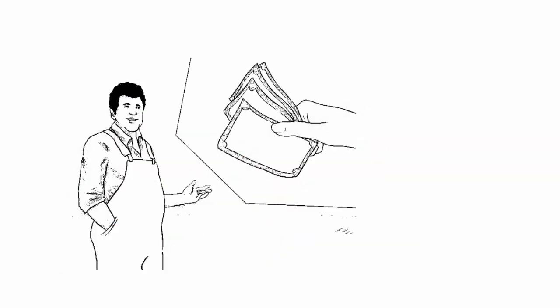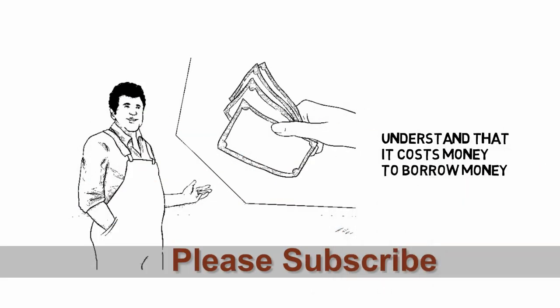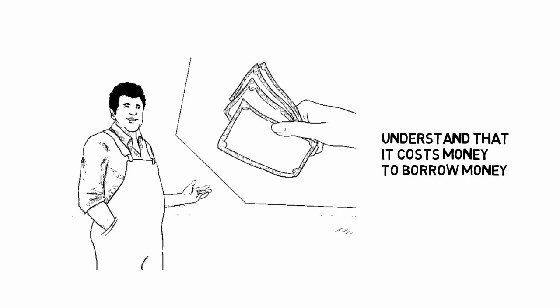Part 1: APR Basics. Understand that it costs money to borrow money. If you're using a credit card or taking out a mortgage on a home, you may need to use more money than you currently have. If you're given credit, the lenders who give you that credit expect you to pay the premium back in addition to a finance charge for the luxury of being given money. This finance charge is called APR.